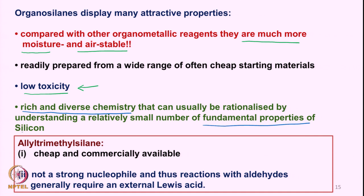This rich chemistry can easily be understood and rationalized by a relatively small number of fundamental properties of silicon — basically, that the anion alpha to silicon and the cation beta to silicon are stabilized. We can also have well-defined transition states resembling a cyclohexane chair form, and that helps in rationalizing product formation.